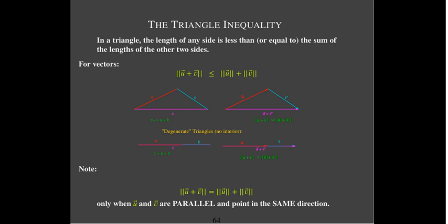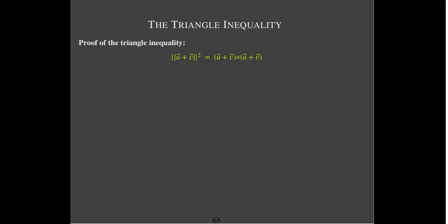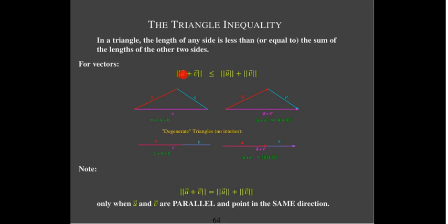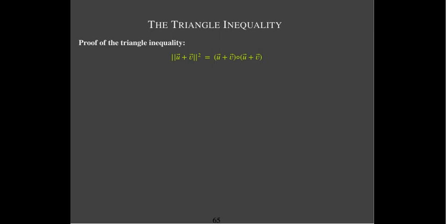Suppose we didn't know this fact from geometry and wanted to prove this inequality. Whenever we see the length of the sum or difference of two vectors, we start by squaring it, because squaring the length of a vector is the same as the dot product of the vector with itself. We'll use FOIL, then replace u dotted with u with the length of u squared, v dotted with v with the length of v squared, and u dotted with v with the cosine formula.